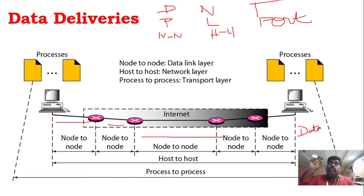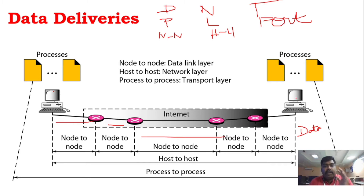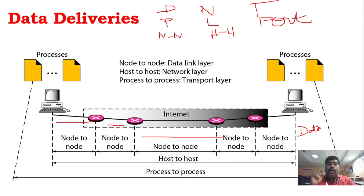In the network layer we have source-to-destination delivery, also called host-to-host delivery. The host is completely responsible for the data transfer. That is why we call it host-to-host delivery, and the network layer uses IP addresses, which are logical addresses.